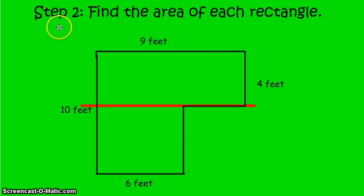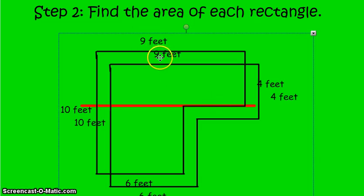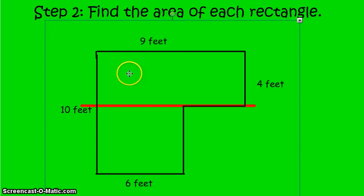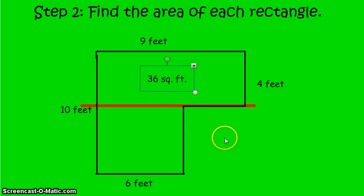Step two is to find the area of each rectangle. Looking at the top rectangle, the formula is length times width, or base times height. The base is 9 feet — because if the top is nine feet, this line is also nine feet. The height or width is 4 feet. Nine times four is 36, and we measure that in square feet. So the area of this top rectangle is 36 square feet.